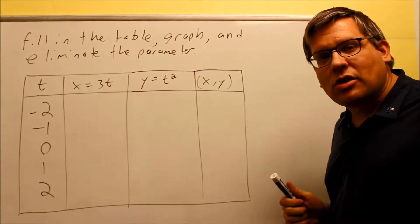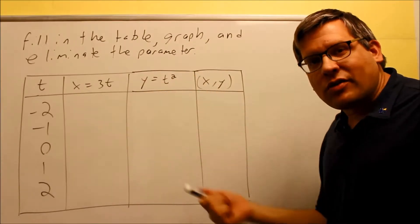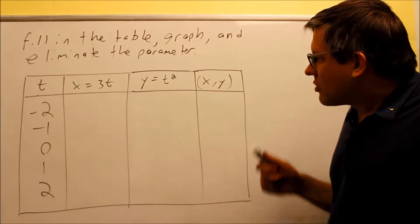Eliminating the parameter means that you're basically rewriting this equation without the t in it. So let's go ahead and start one of these.